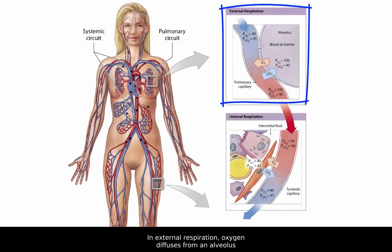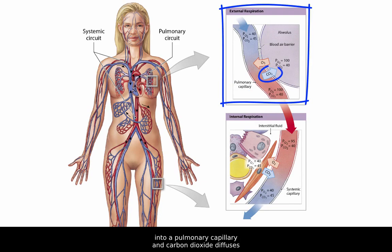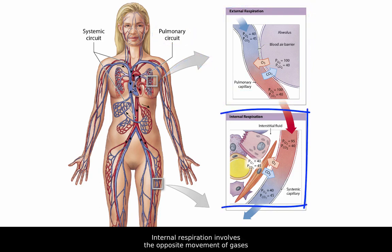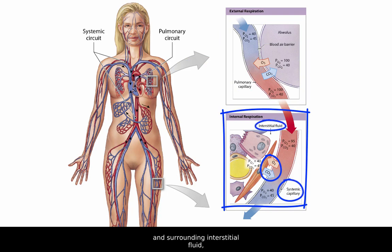In external respiration, oxygen diffuses from an alveolus into a pulmonary capillary, and carbon dioxide diffuses from the pulmonary capillary into the alveolus. This occurs within the pulmonary circuit. Internal respiration involves the opposite movement of gases between the systemic capillaries and surrounding interstitial fluid, occurring within the systemic circuit.